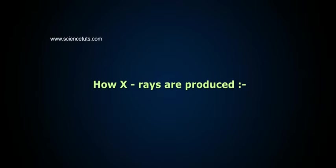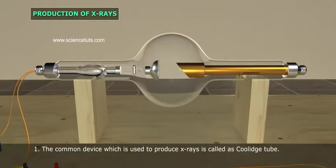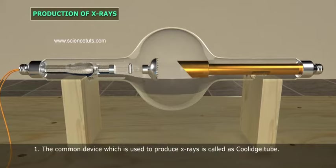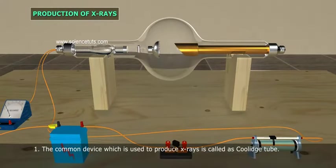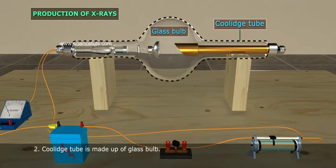How are X-rays produced? The common device which is used to produce X-rays is called a Coolidge tube. Coolidge tube is made up of a glass bulb.